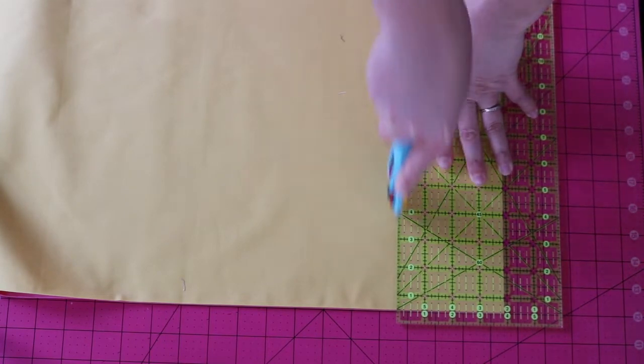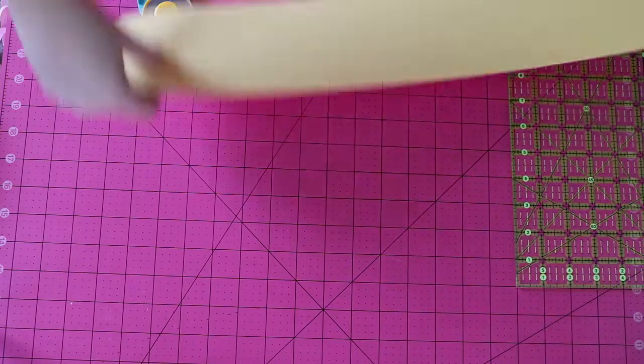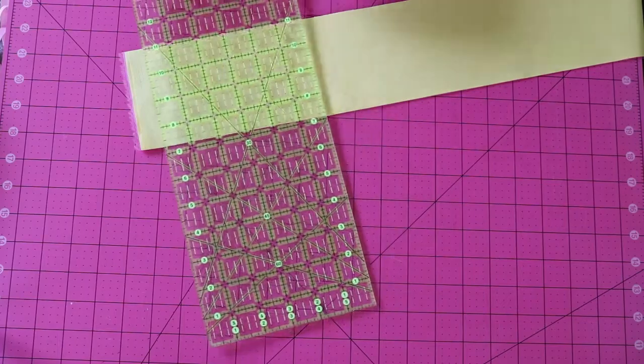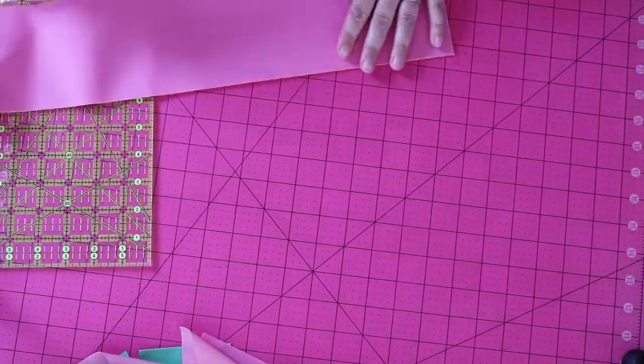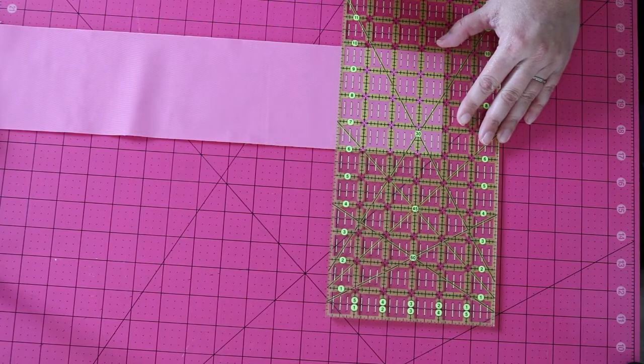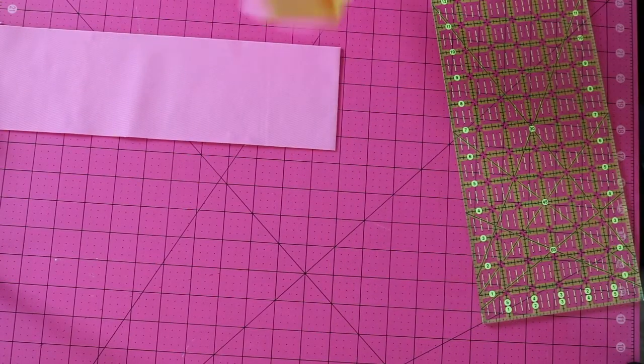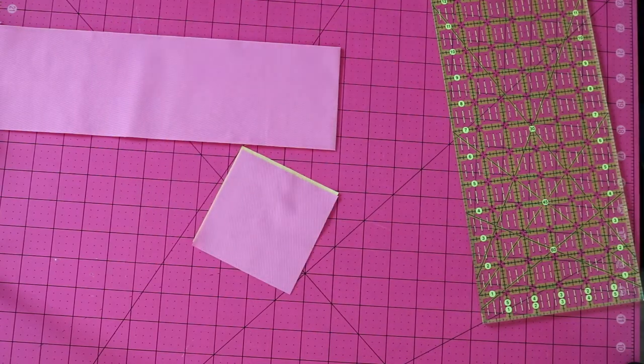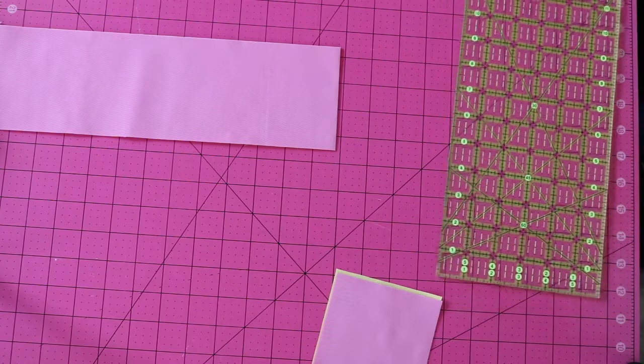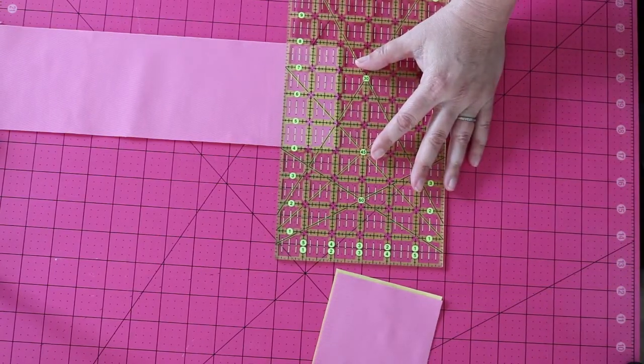That's three and seven eighths and then I'll cut off my selvedges. I need one three and seven eighths inch piece and then four two inch pieces. So three and seven eighths inches and I need one of each so I'm putting the other two away and then I need four two inch pieces of each.